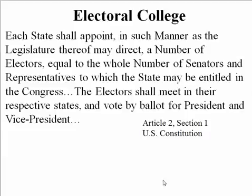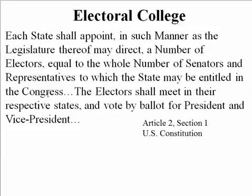In the Constitution, under Article 2, Section 1 — later amended by the 12th Amendment — our Founding Fathers wrote: 'Each state shall appoint, in such manner as the legislature thereof may direct, a number of electors equal to the whole number of senators and representatives to which the state may be entitled in the Congress. The electors shall meet in their respective states and vote by ballot for president and vice president.' Let's pinpoint some keywords and see what this means.